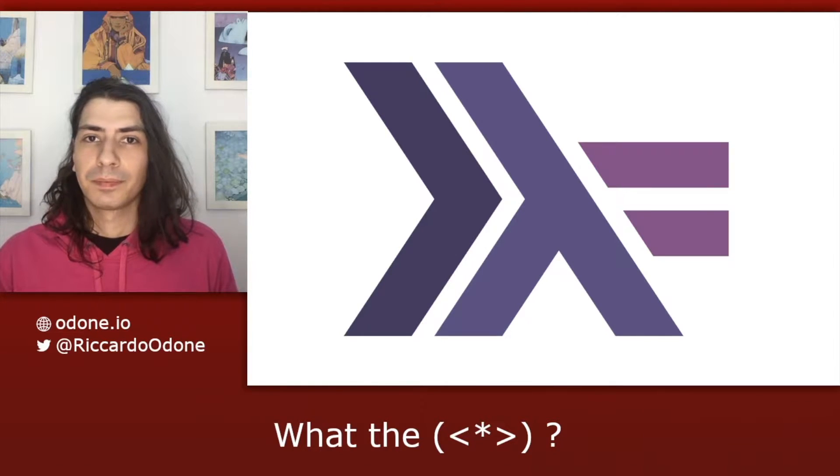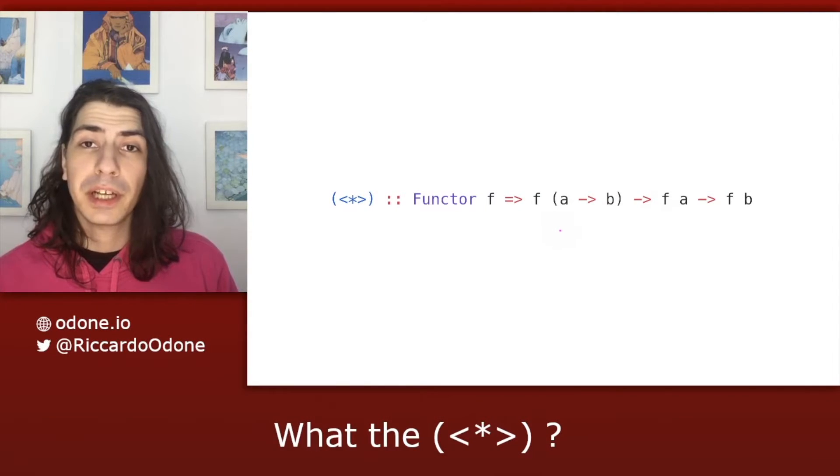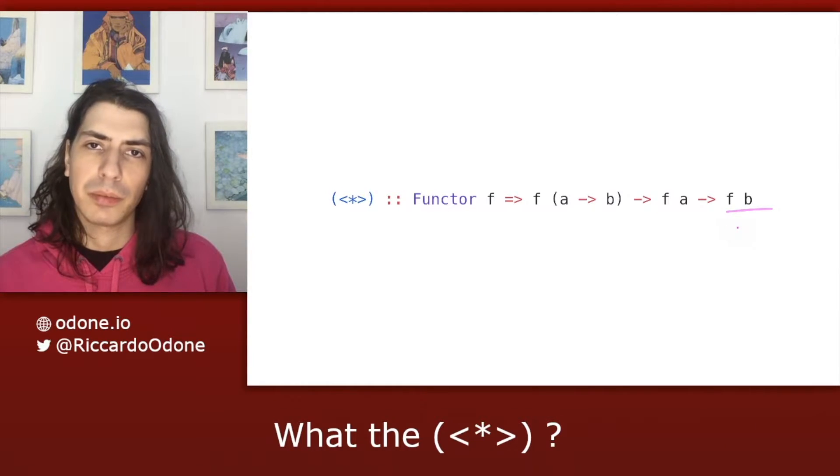Let's take a look at the type signature. Okay, so here we have the type signature. Notice that everything is wrapped up in a context f, which is a functor. So we have a step function that goes from a to b wrapped up in the context f, an initial value of type a wrapped up in the context f, and our output of type b wrapped up in a context f.